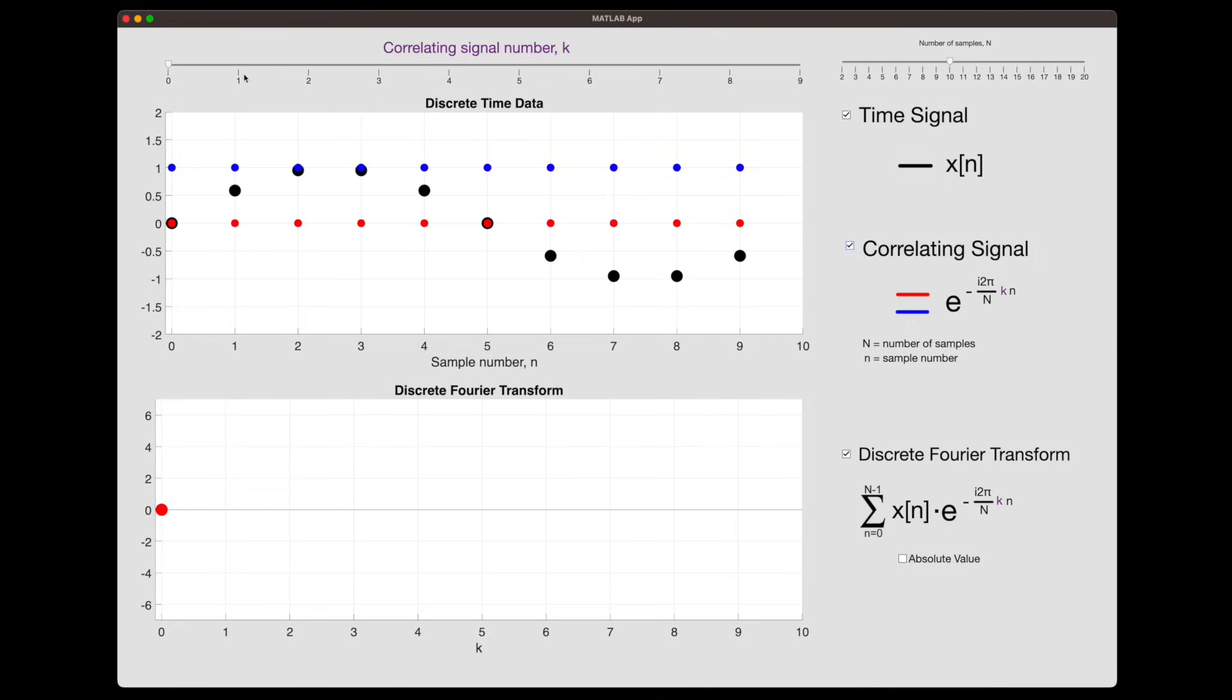Now let's move on to a new set of frequencies, say k equals one. Our correlating signal now consists of a sine and cosine wave with a period equal to the length of the time signal. And if we multiply these with x sub n, and then sum the result, the value is larger. And we can visually see that the correlating signal is near the same frequency as our time signal. And so at least for the imaginary component, which is perfectly out of phase with our time signal, the product of the two is always negative. And therefore, the summation is also going to be negative. So there's a strong correlation between the two at k equals one.